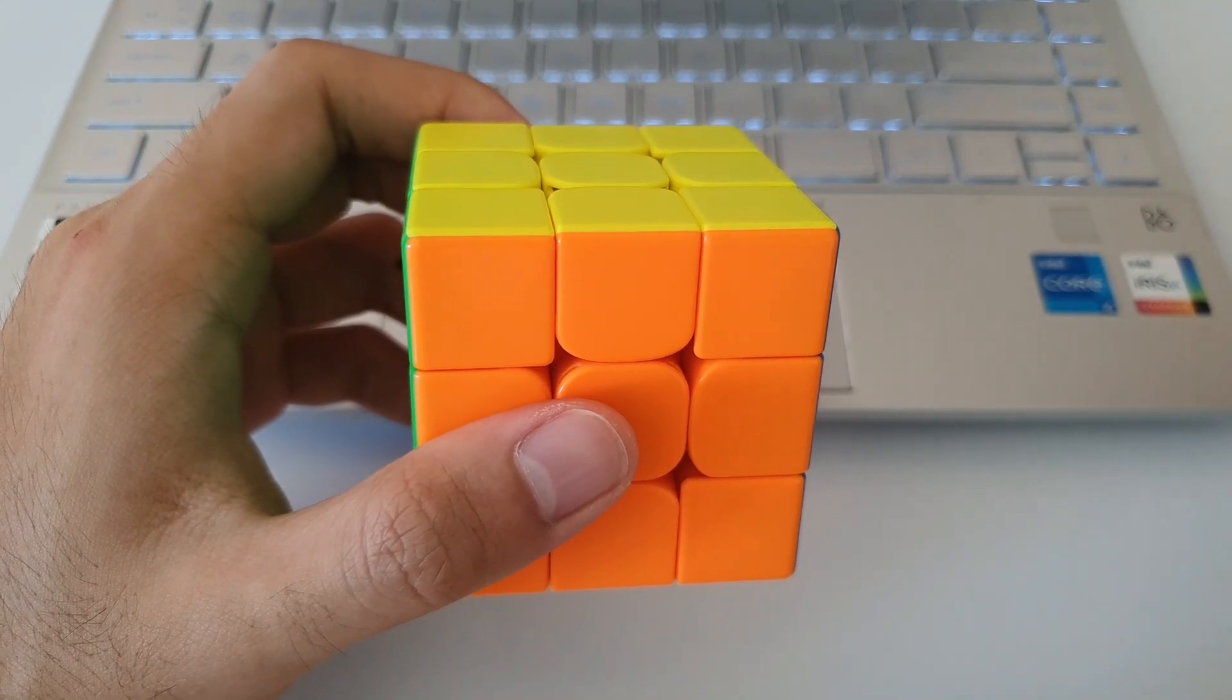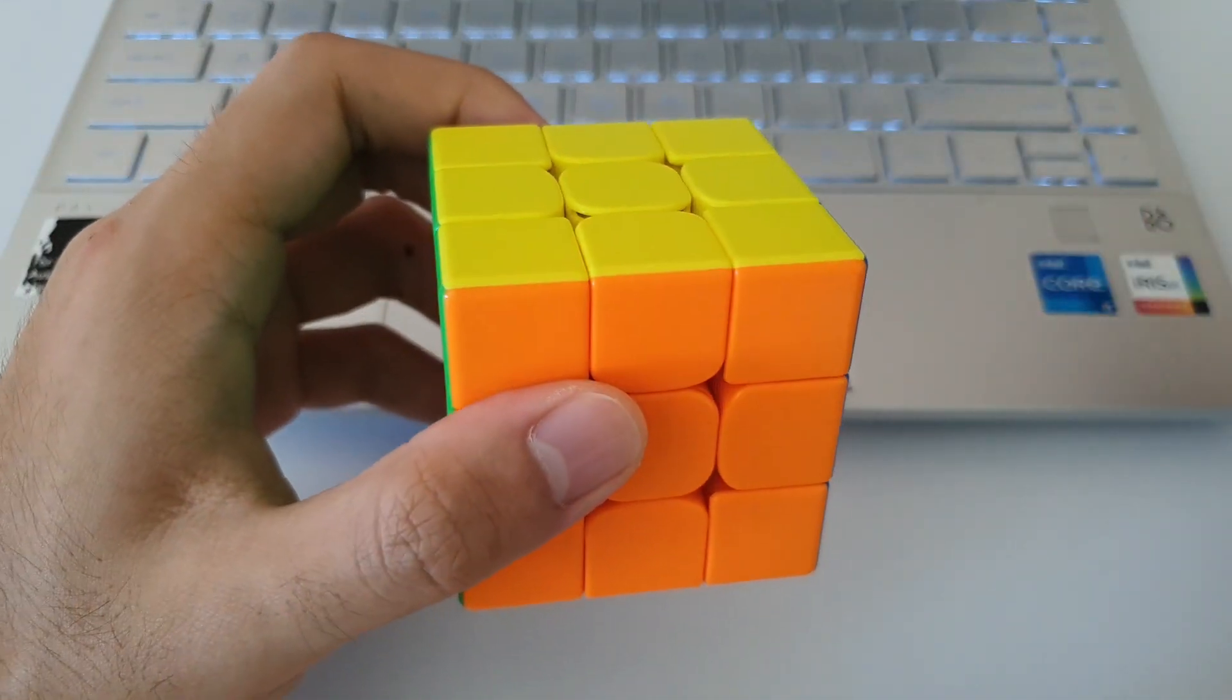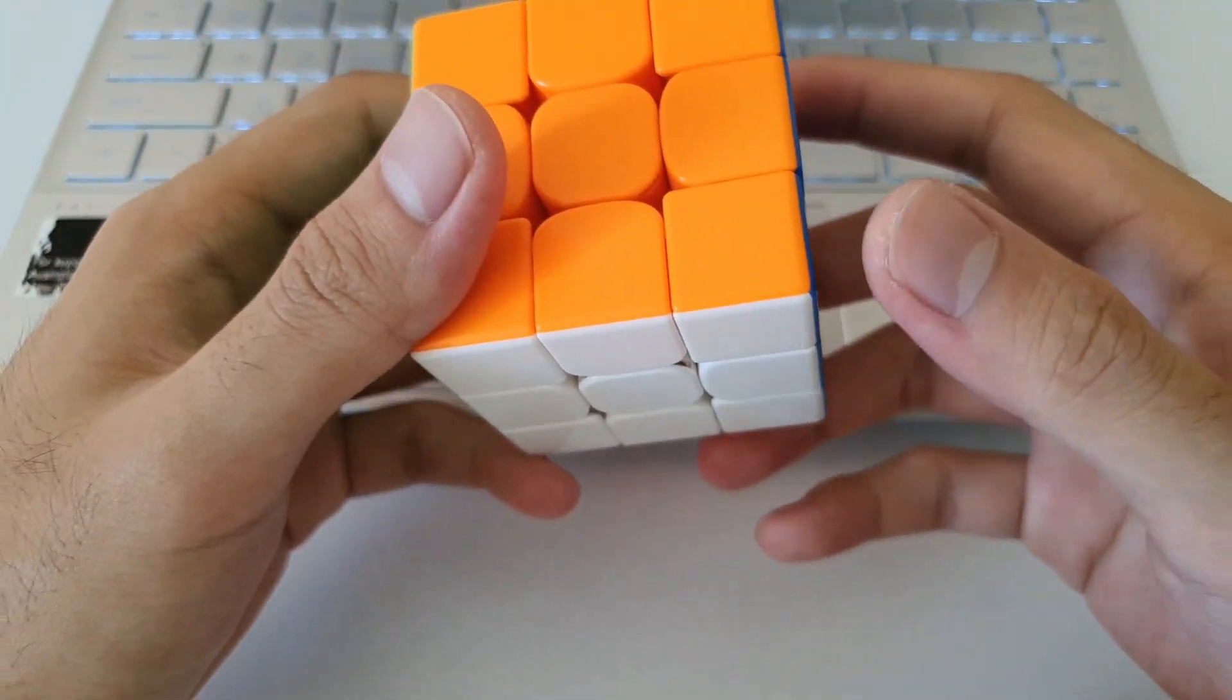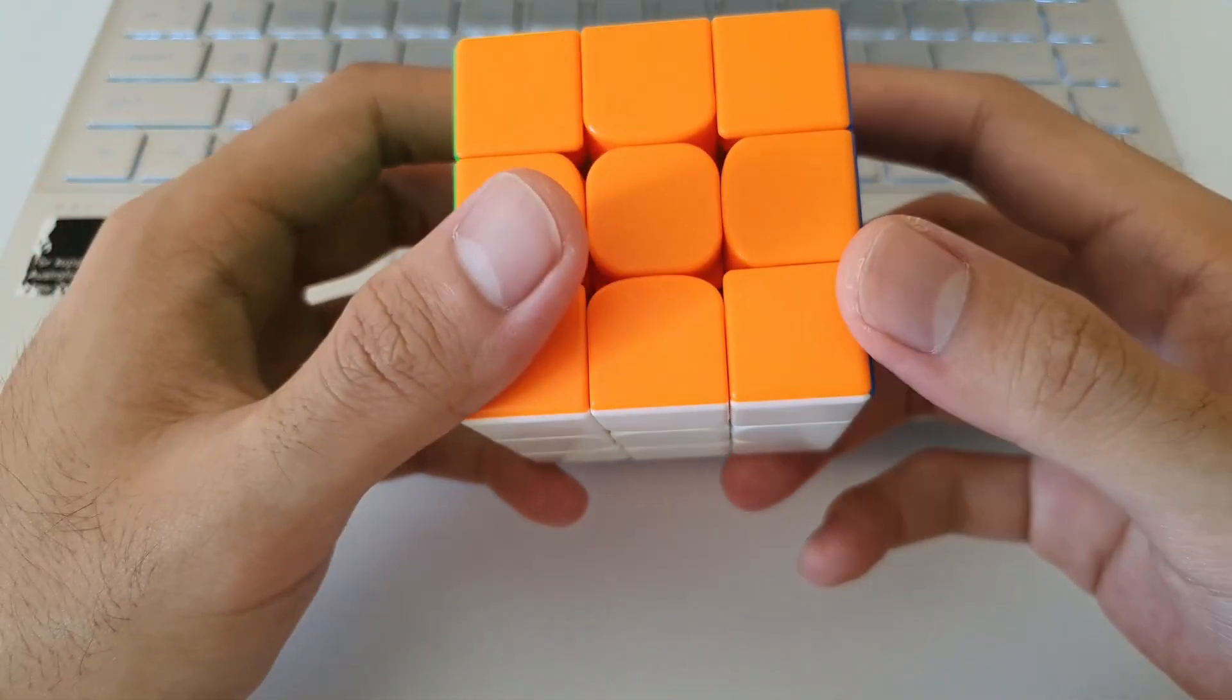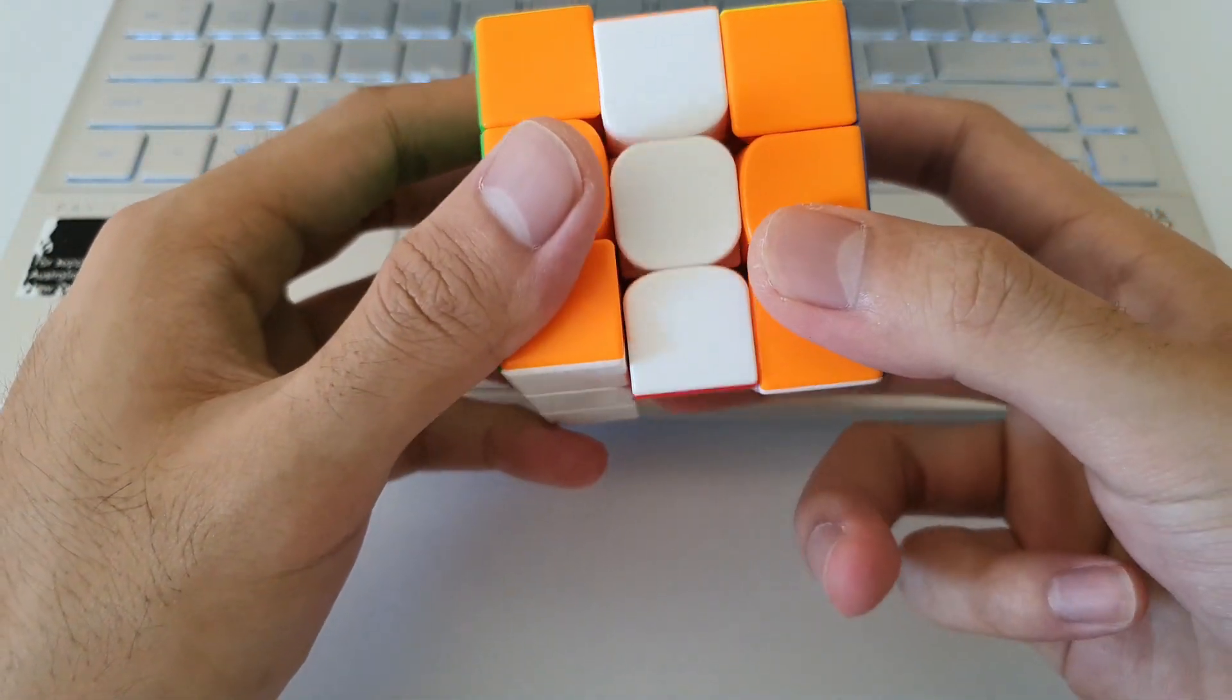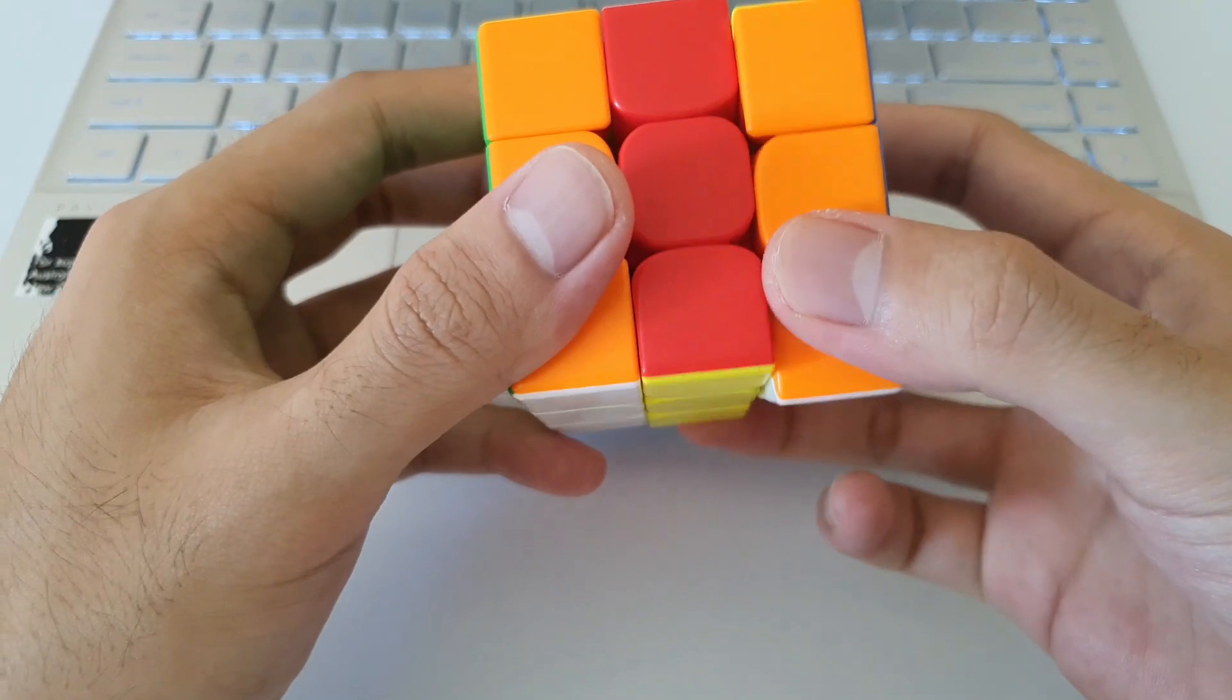So one of the main challenges a lot of beginners face when they first learn the H perm is the M2 moves. So how I do the M2 moves is that I use my ring finger followed by middle finger for the double flick. So it goes something like this, ring followed by middle, like that, hitting the middle layer.